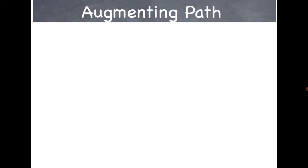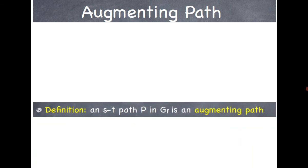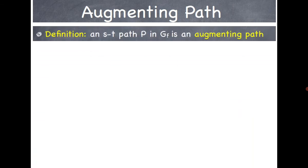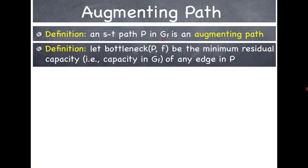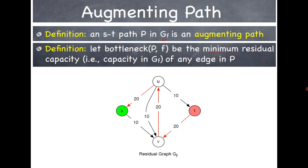The next concept is the augmenting path. An s-t path in the residual graph G_f — any path from s to t — is an augmenting path. Once there is an augmenting path, you choose the minimum value along that path, which represents the minimum flow that can pass from s to t. This helps us augment the flow in each step. It will be clear once we do an example.